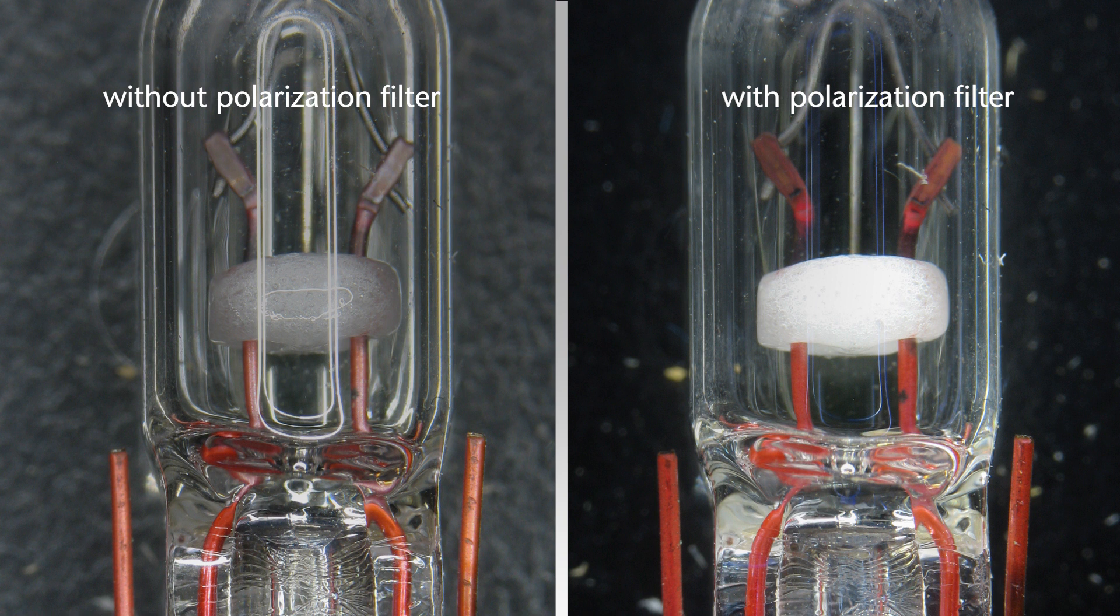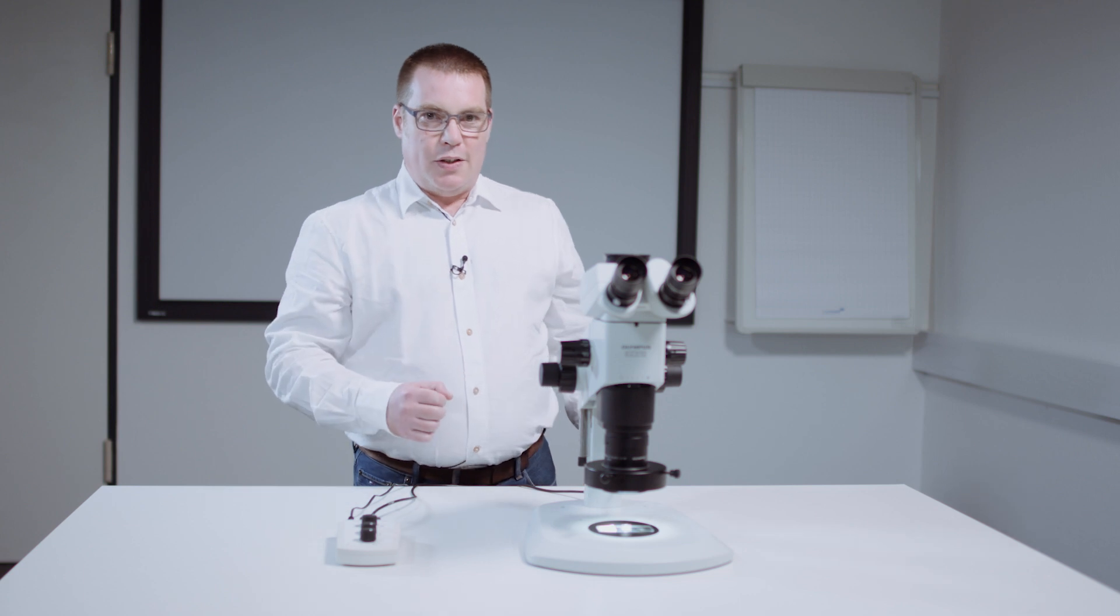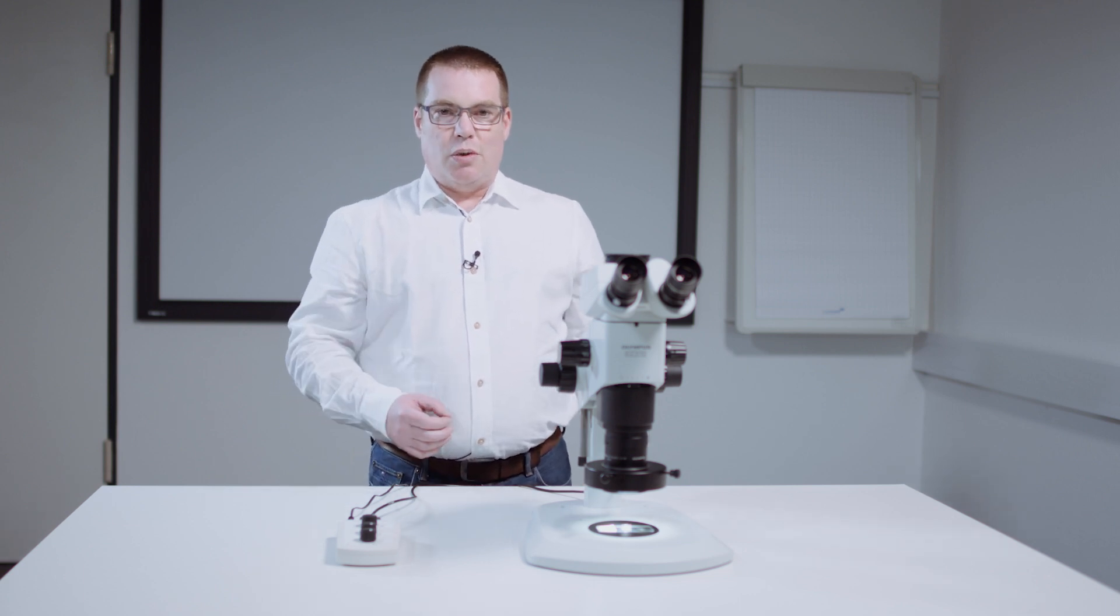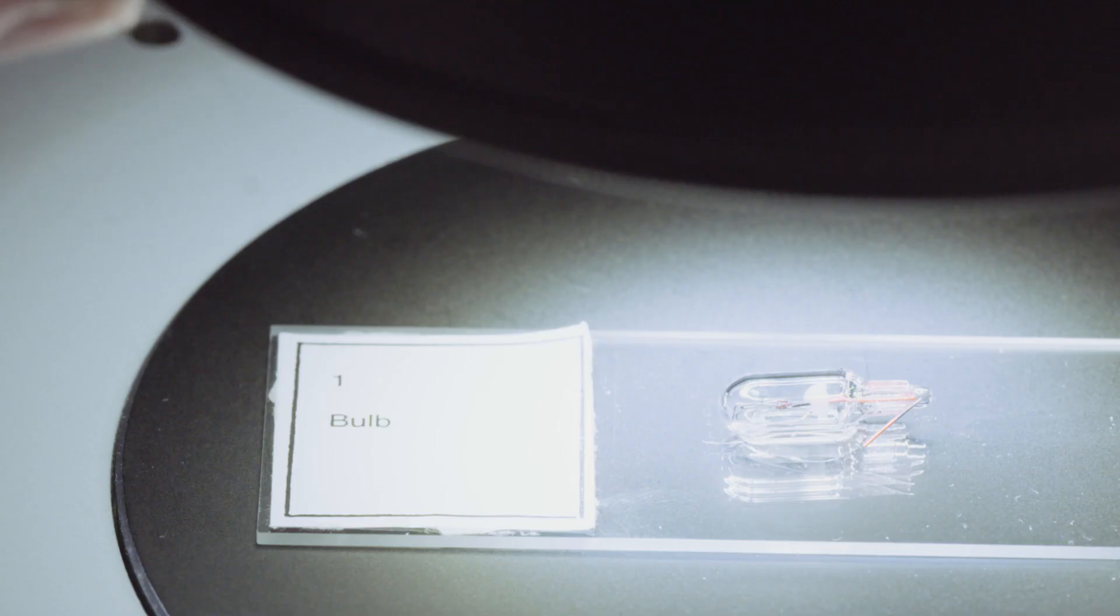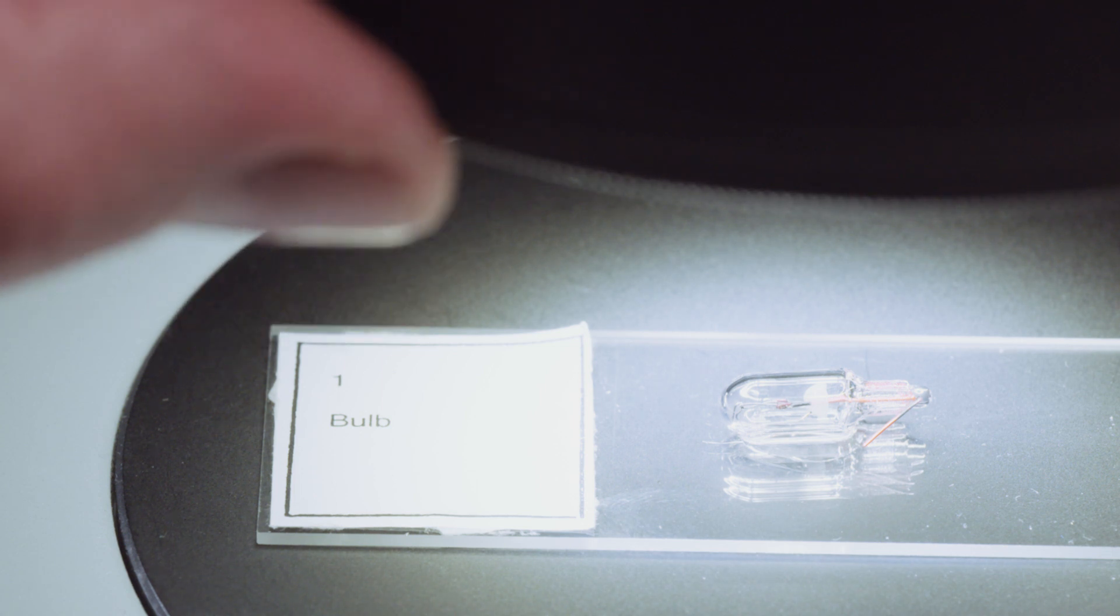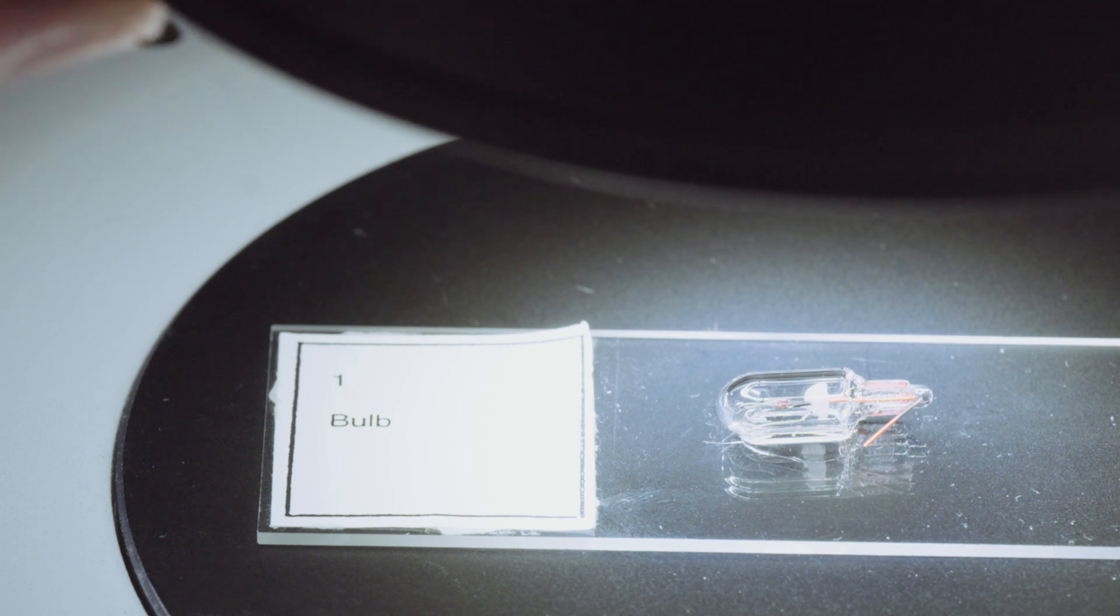In the conventional design, polarization filter sets are used that contain a fixed analyzer and a manually rotatable polarizer. Cross-polarization can thus be achieved by manually rotating the polarizer.